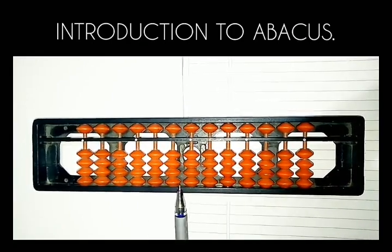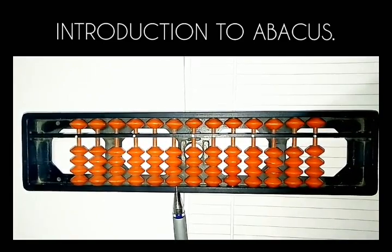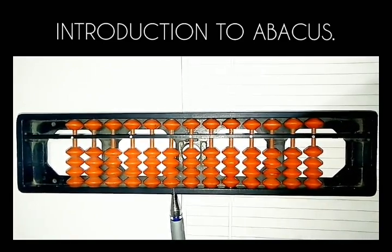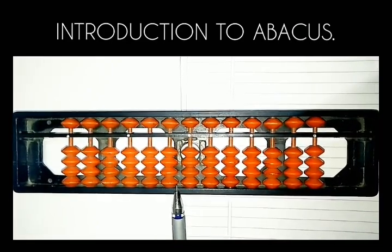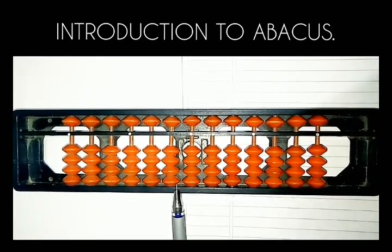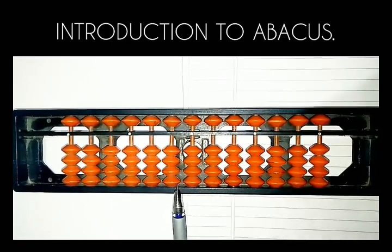Right now the value of the Abacus is zero. Why is the value of Abacus zero? Because none of the beads are touching the bar. Is any bead right now touching the bar? No. So the value of the Abacus is zero.